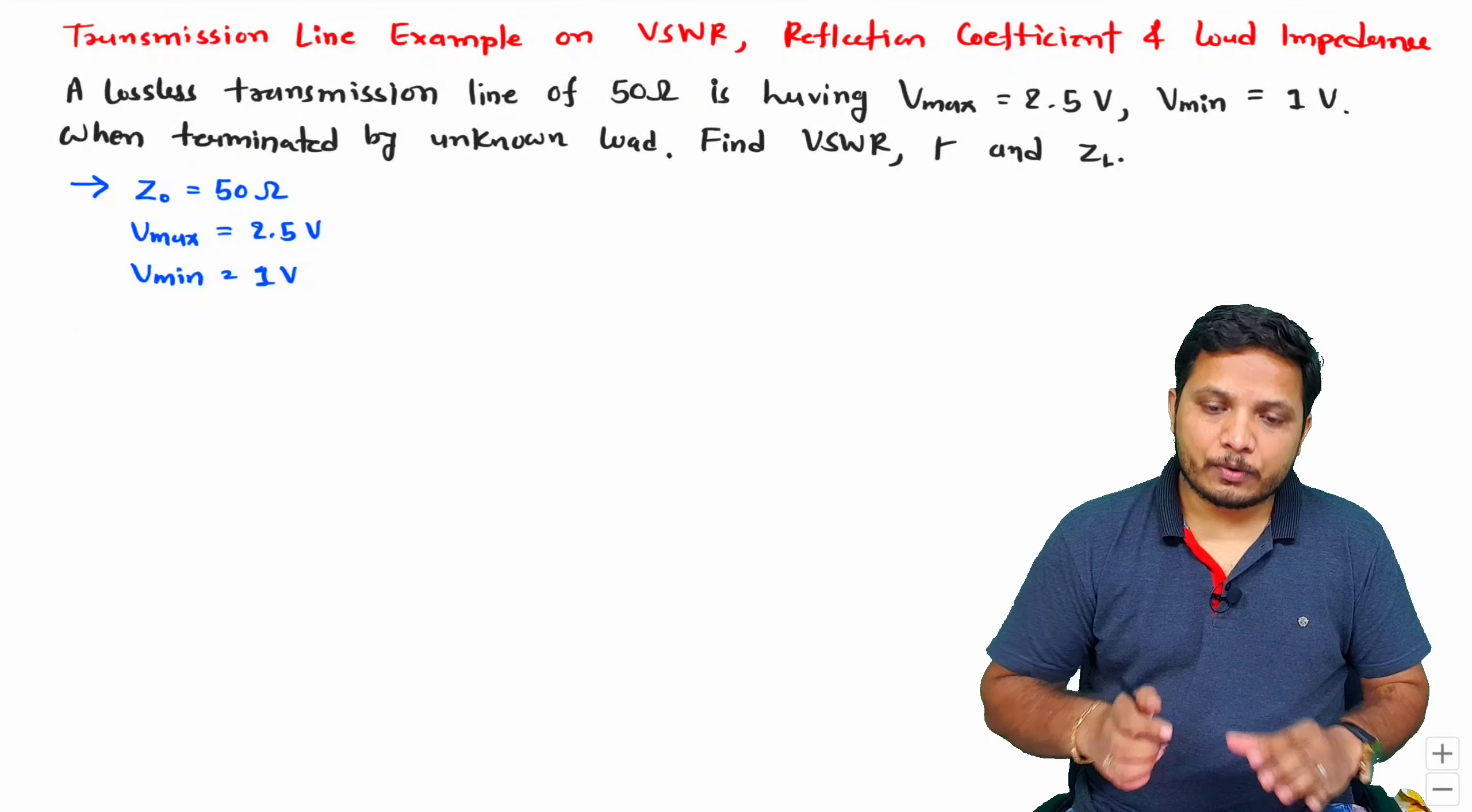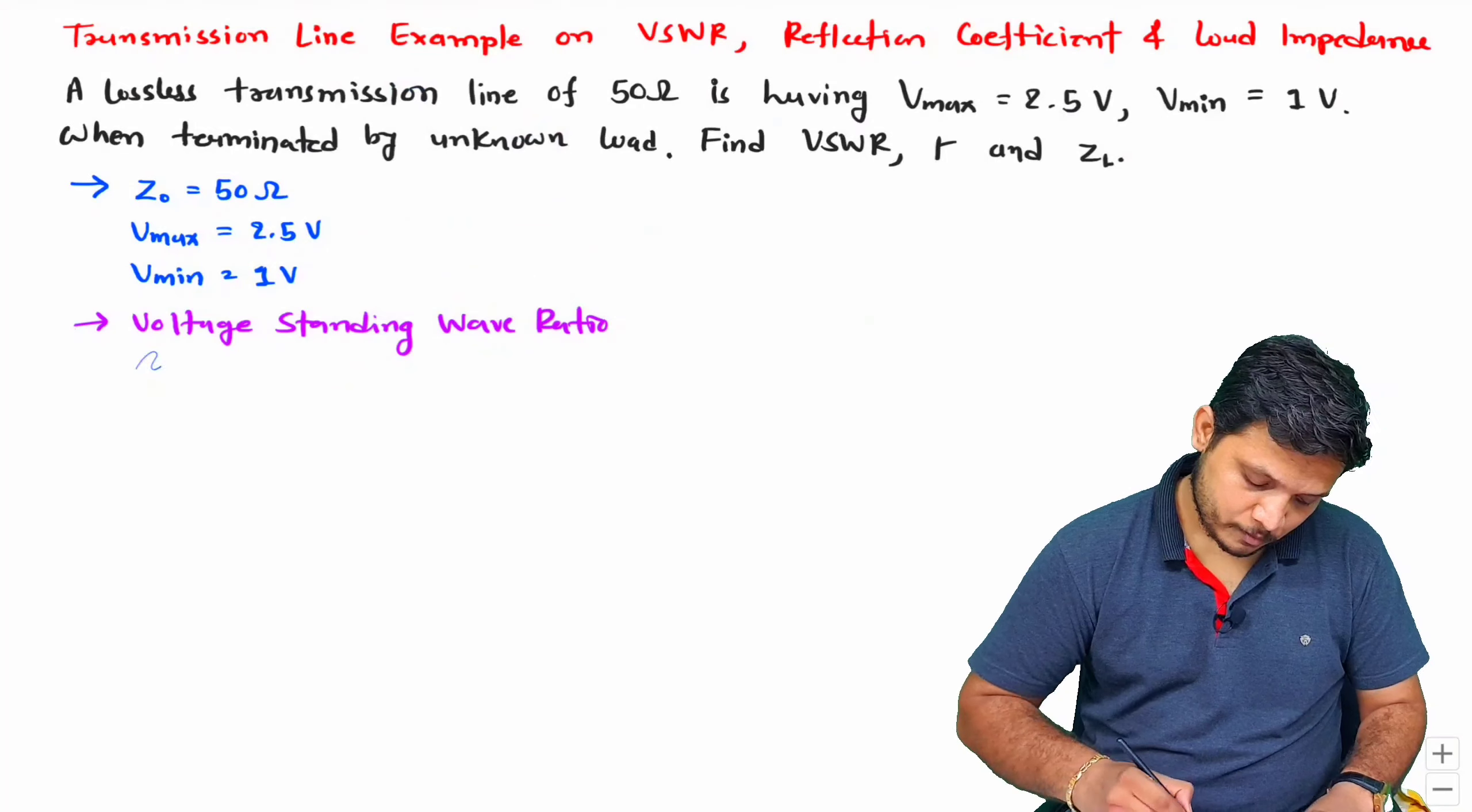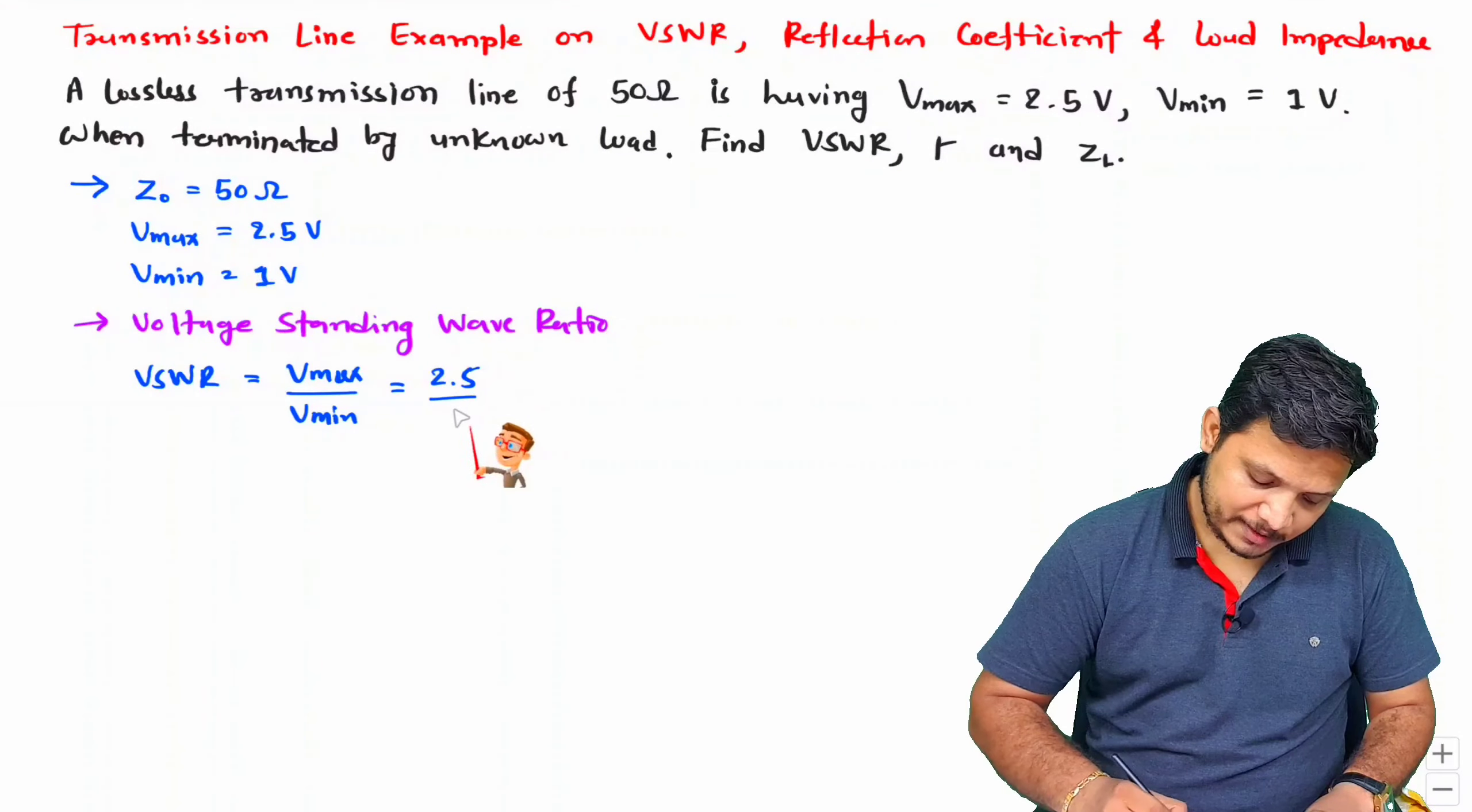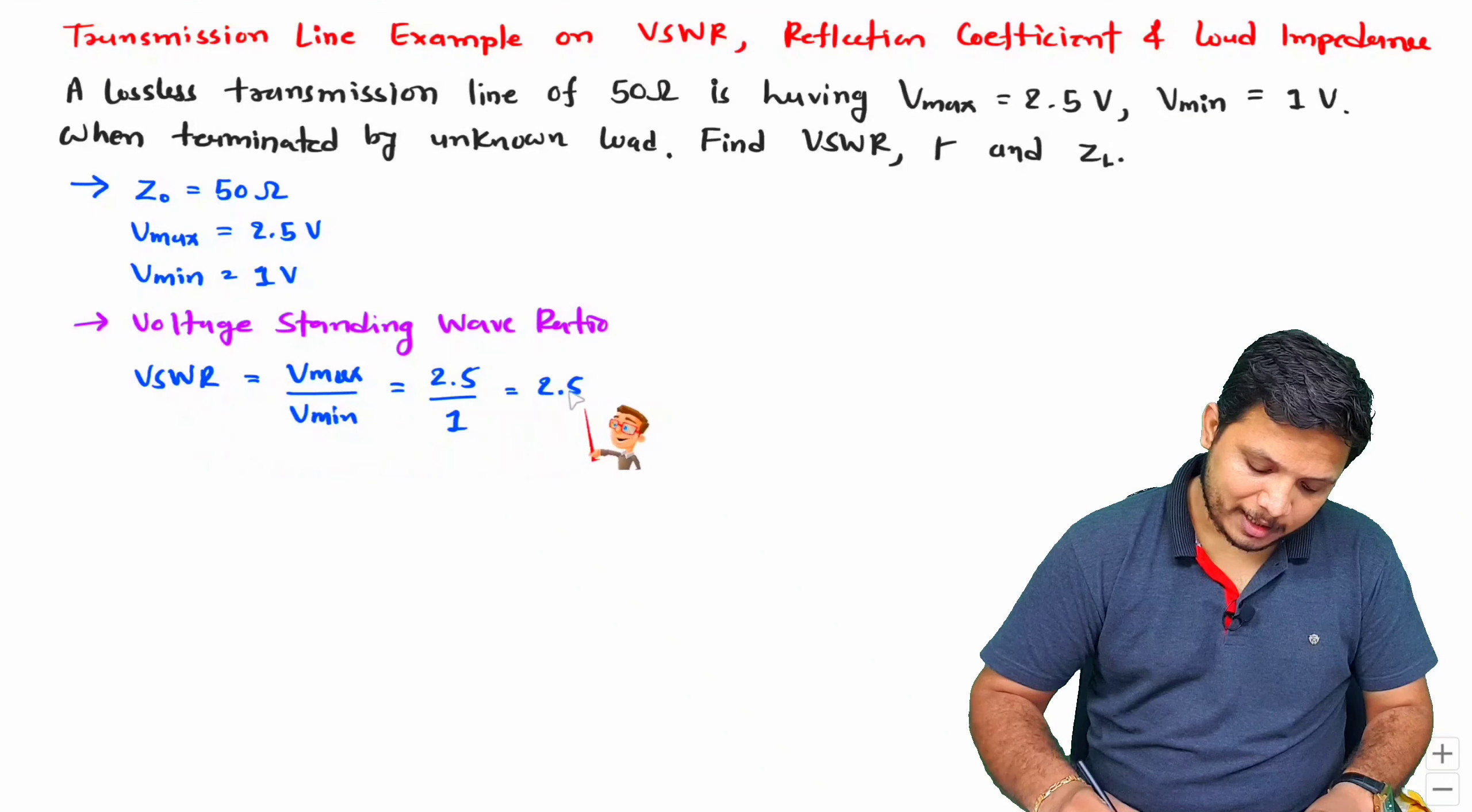VSWR is the ratio of Vmax divided by Vmin. Vmax is 2.5 voltage and Vmin is 1 voltage, so this will be 2.5. Dear students, VSWR is unitless.